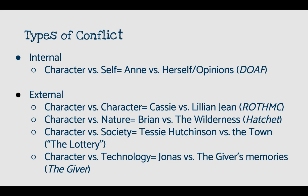Next is character versus society, which basically means that a character has a different opinion than the rest of society does, and they have to figure out how to resolve the conflict between them. In seventh grade, most of you read a short story called The Lottery. It's about a town that has a tradition, and the main character Tessie Hutchinson has to go against the rest of her society and fight for her belief against the rest of her town.